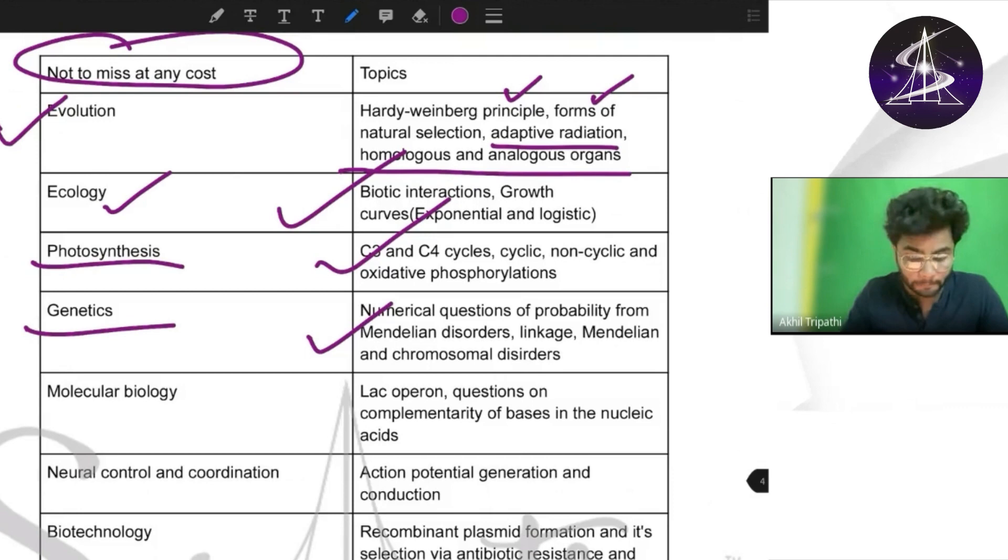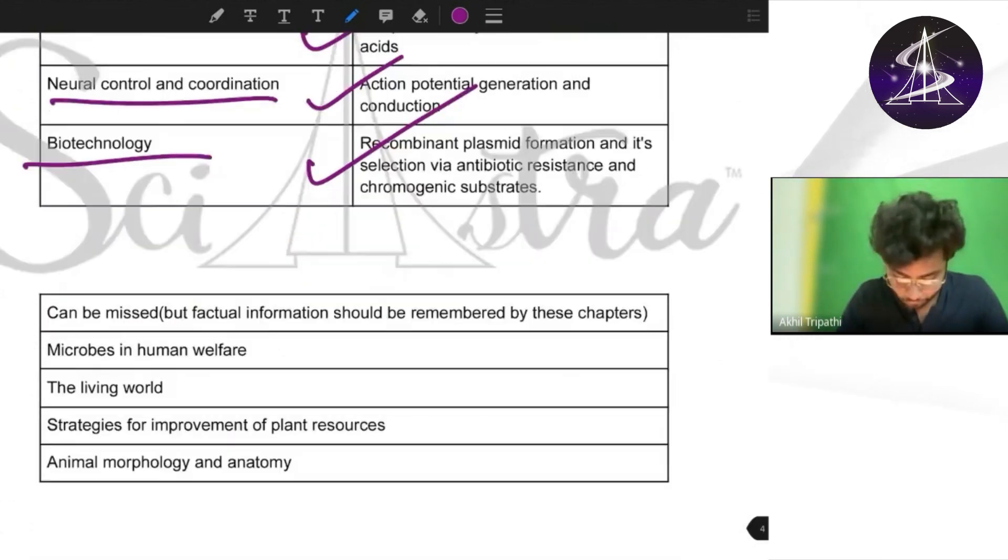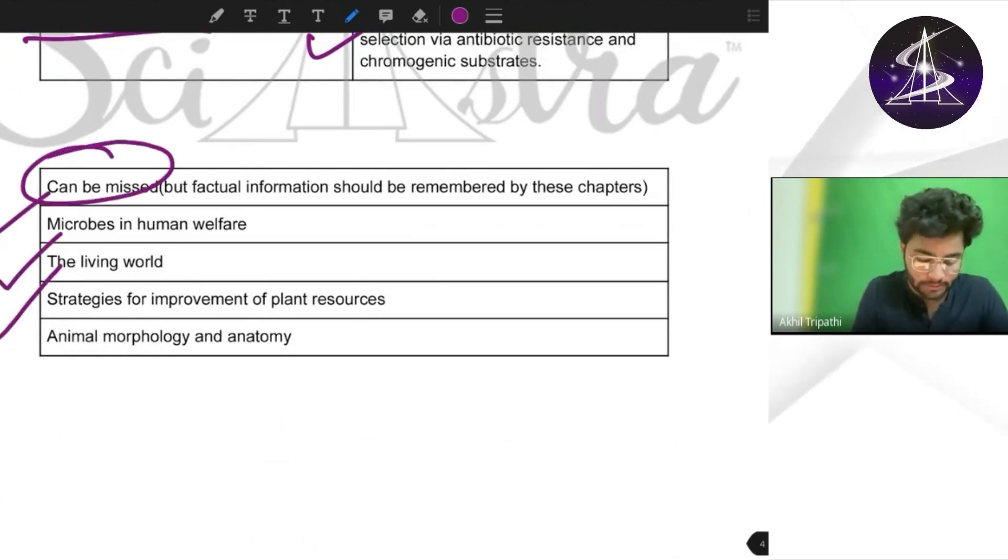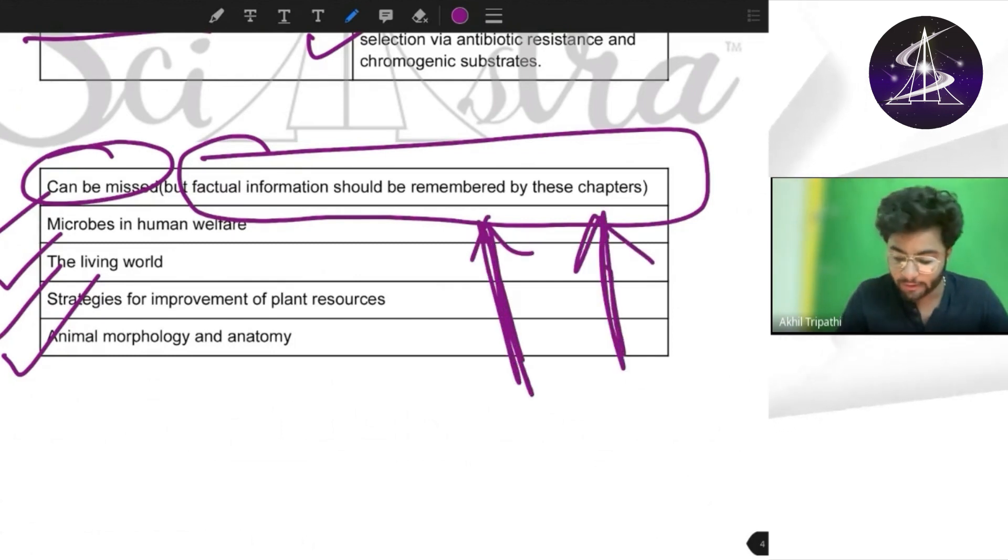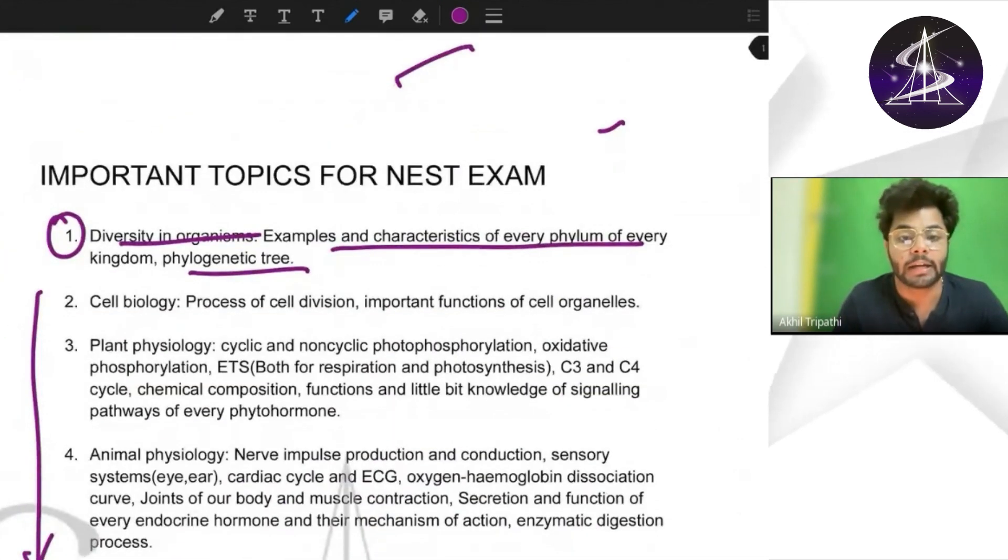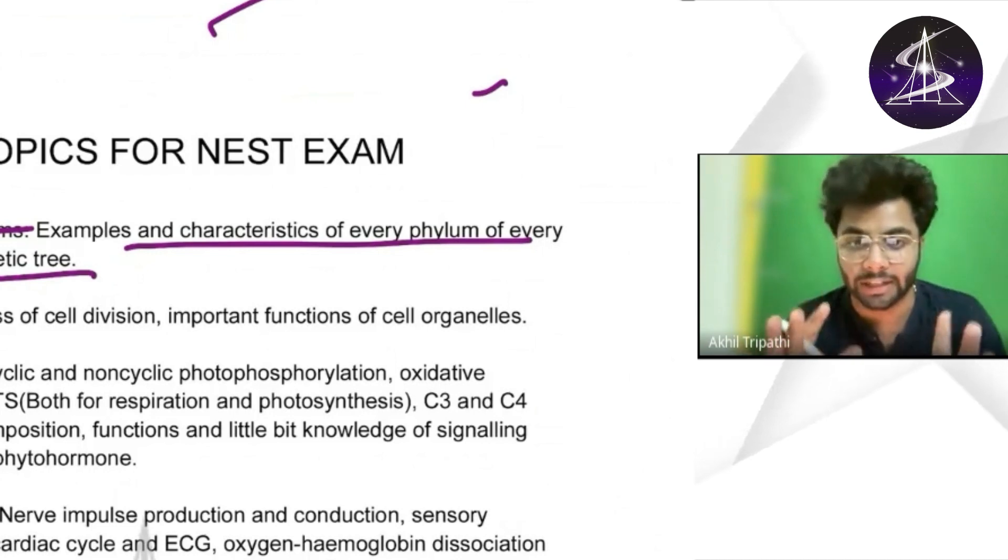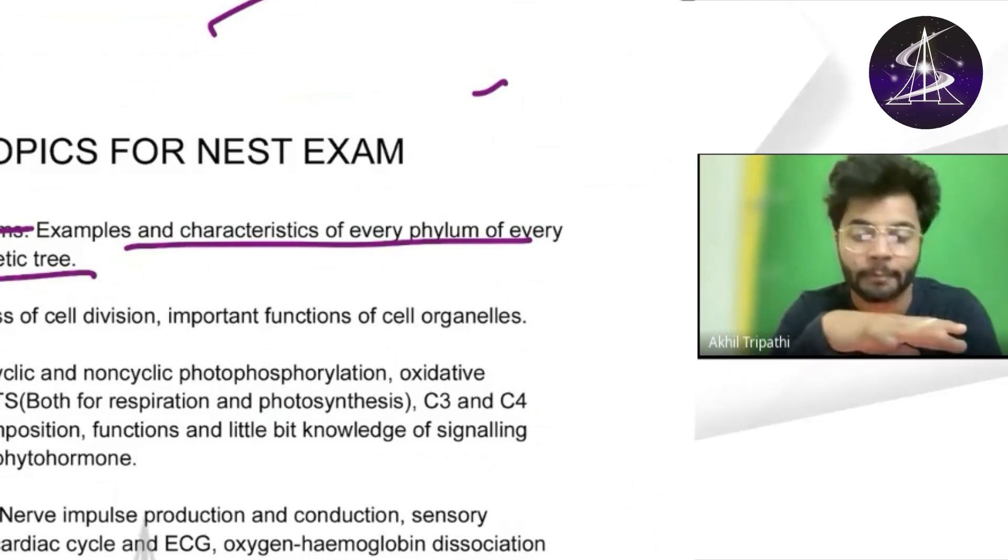Biotechnology again same thing, and chapters that cannot be missed are again same. Those chapters that can be missed are the least important chapters, but factual information should be remembered from these chapters as well because in IAT even factual questions come. So this was the analysis for biology of NEST and IAT 2023, basically the important topics and chapters you should focus on if you have very less time like two to three months remaining. With that, all the best. If you remember, last year also our predictions were very accurate.